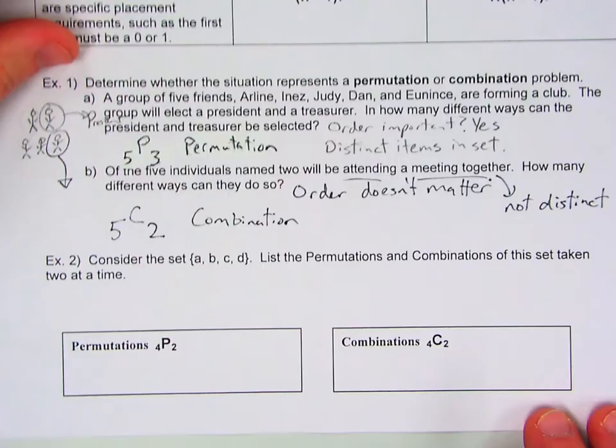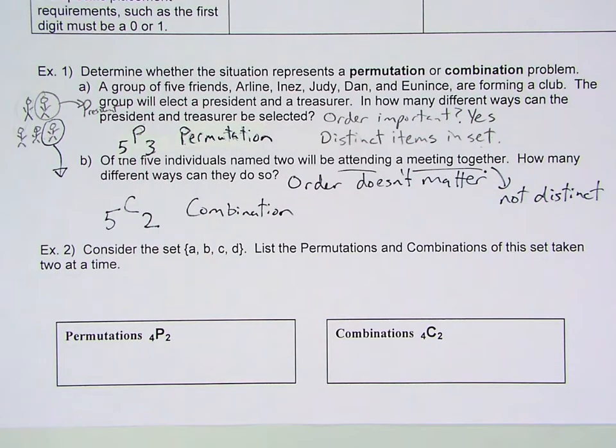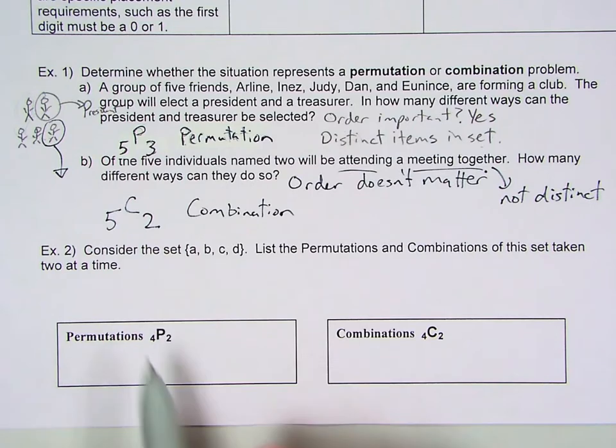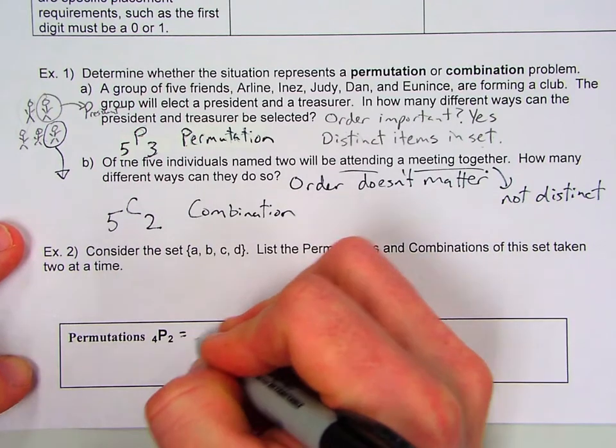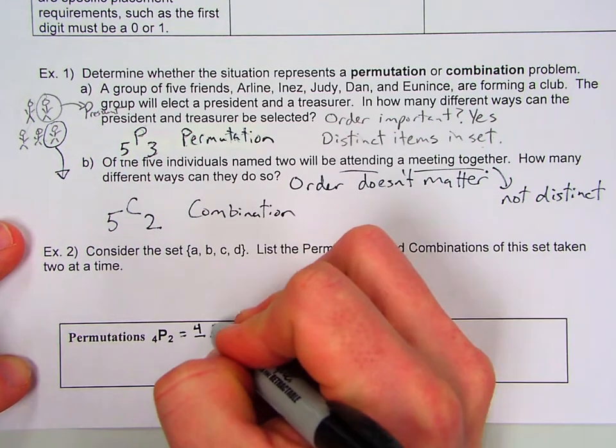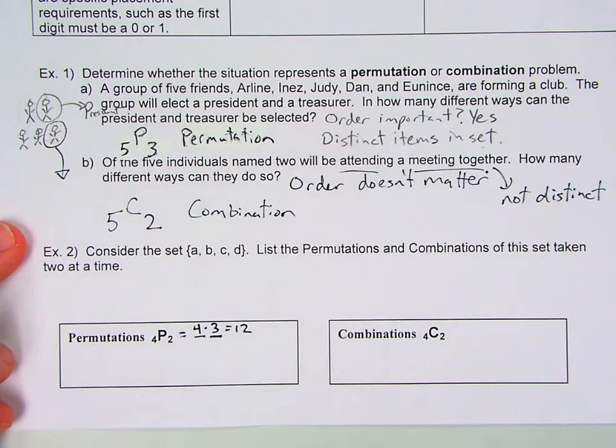So we're going to go ahead and list out some of these permutations and combinations now. So we have the set A, B, C, and D. And if we want to list the permutations, this is what we did last time. So we can figure out how many there are. So remember the 2 tells us how many spots we have. And then the 4 tells me what number I start with. So we know we're going to get 12 permutations.